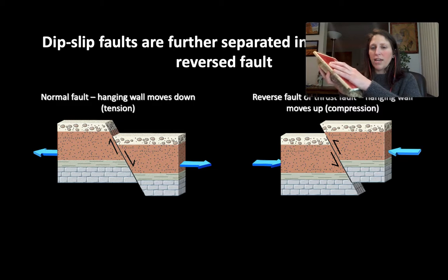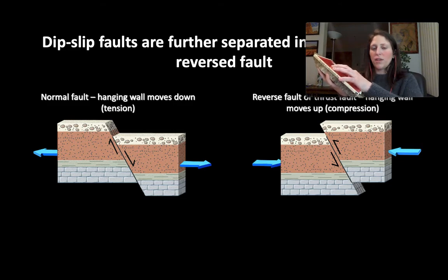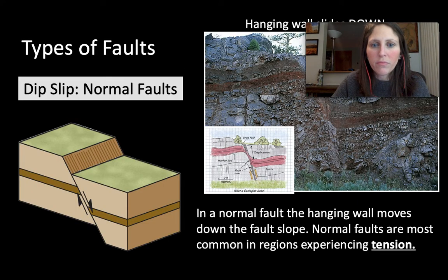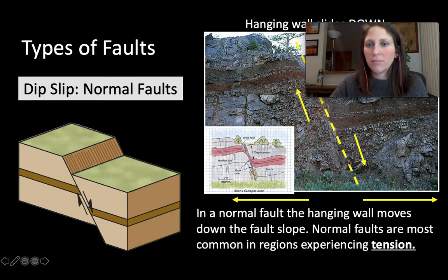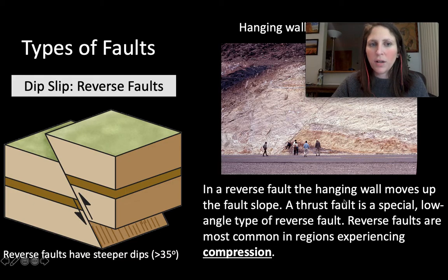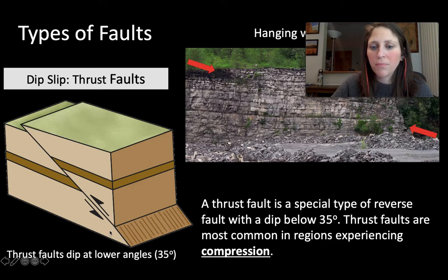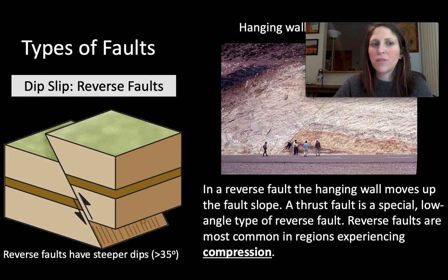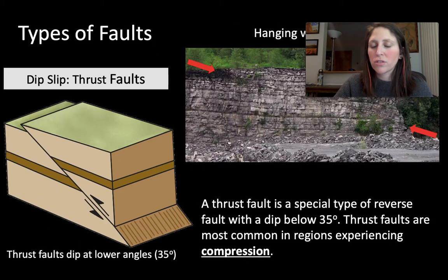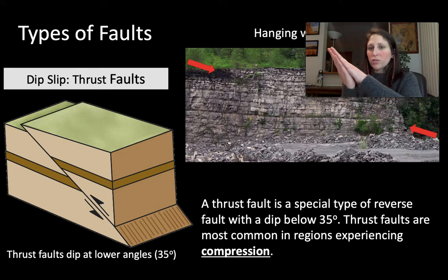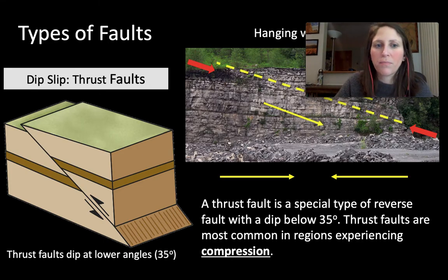In a reverse fault, the hanging wall goes up. The difference is: hanging wall moving down in a normal fault versus moving up in a reverse fault — those are our two major types of dip-slip faults. A thrust fault is really the same as a reverse fault; it just has a slightly lower angle of the two fault blocks. It's which way the fault block is moving: thrust up in a thrust fault, or hanging wall sliding down in a normal fault.